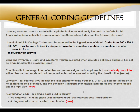For general coding guidelines: you locate a code in the alphabetical index and then verify the code in the tabular list. When you look up a code and open to that specific page, it will give you other things that go along with it — sometimes signs and symptoms, sometimes related conditions. Sometimes it tells you that a code cannot be the primary code or that you must have additional diagnoses related to it. Always go to the tabular portion to be sure you have the right information.